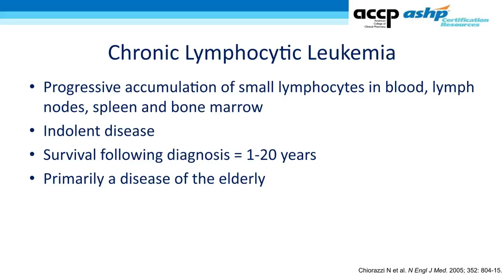Chronic lymphocytic leukemia, or CLL, is a progressive accumulation of small lymphocytes, or B cells, in the blood, lymph nodes, spleen, and bone marrow. A sister disease to CLL is called SLL, or small lymphocytic lymphoma. But for our purposes, they're the same, and in the guidelines, they're treated the same way. So in this presentation, I'm only going to refer to CLL.